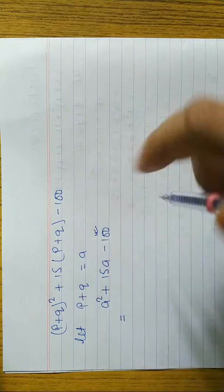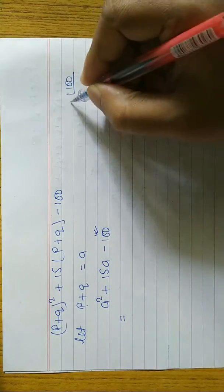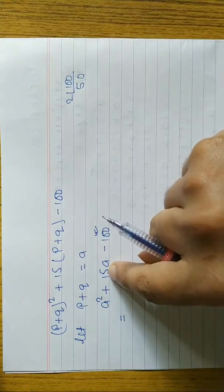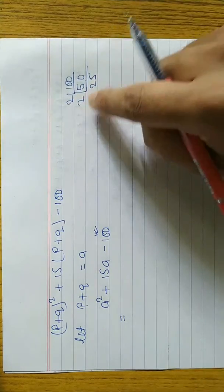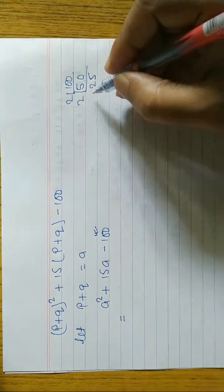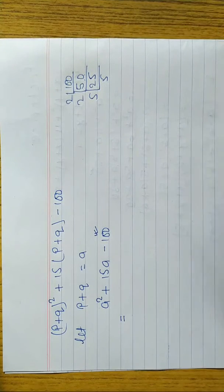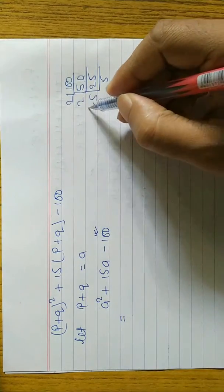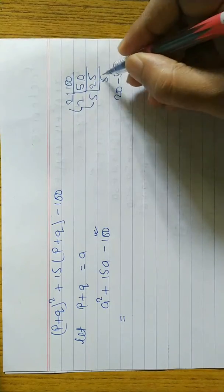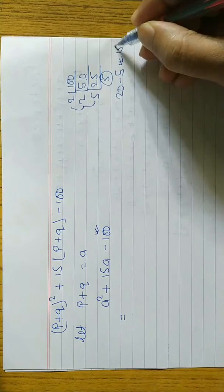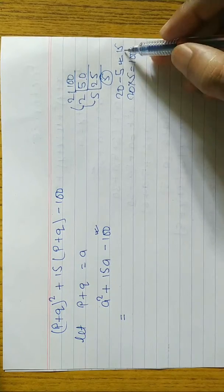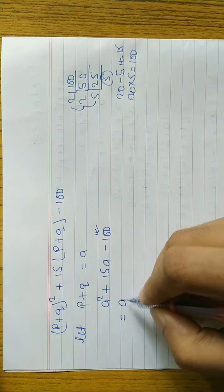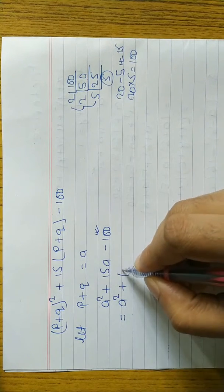We need factors whose multiplication gives 100 and whose subtraction gives 15. Trying: 2 × 5 = 10, no; 25 - 4 = 21, no. Try 20 and 5: 20 × 5 = 100 and 20 - 5 = 15. Yes! So what are the factors? 20 and 5.